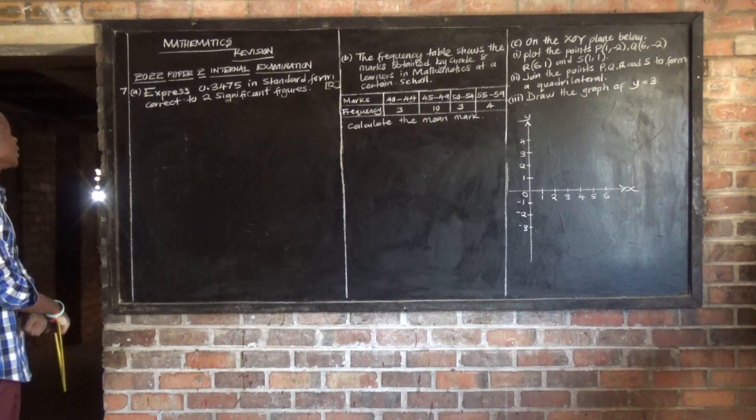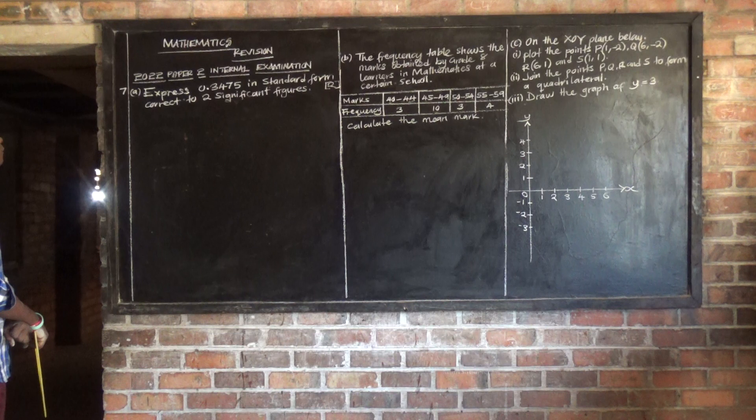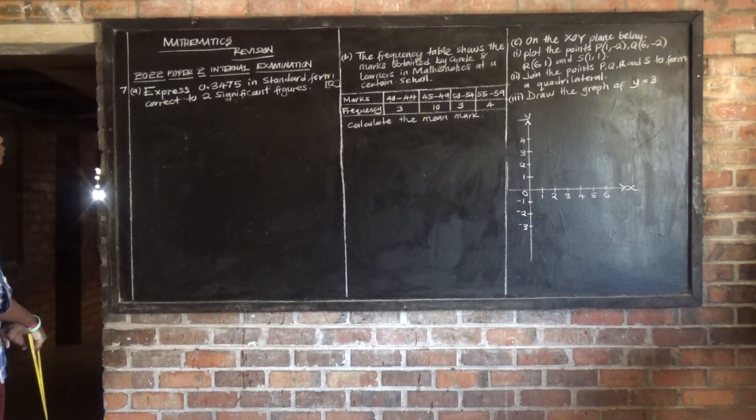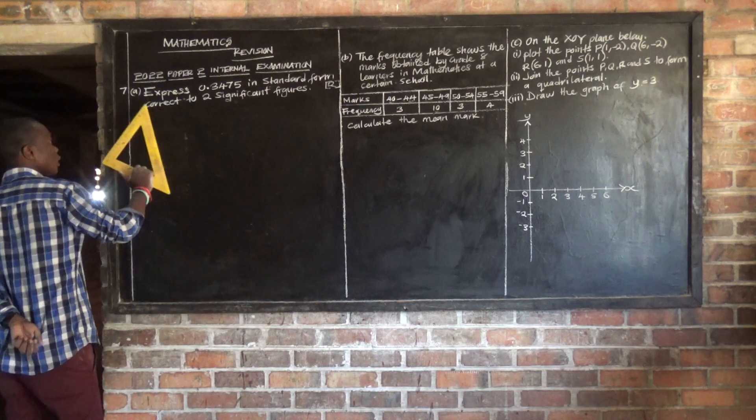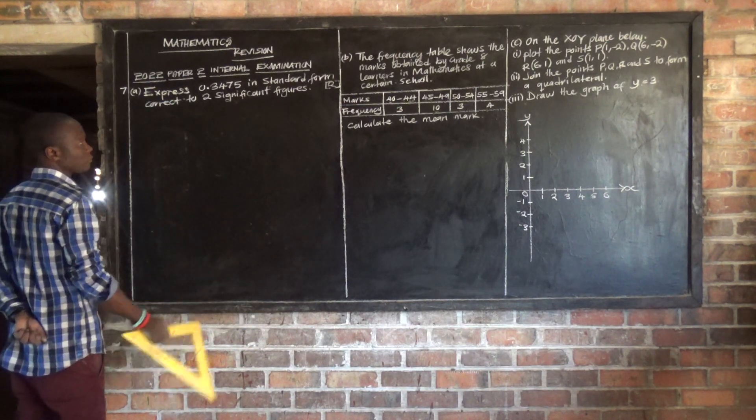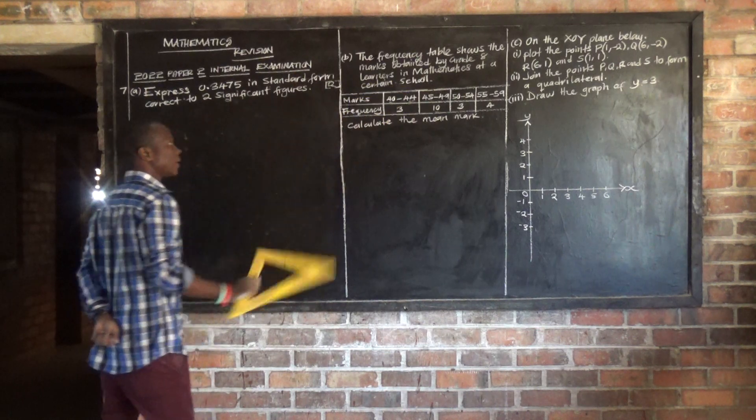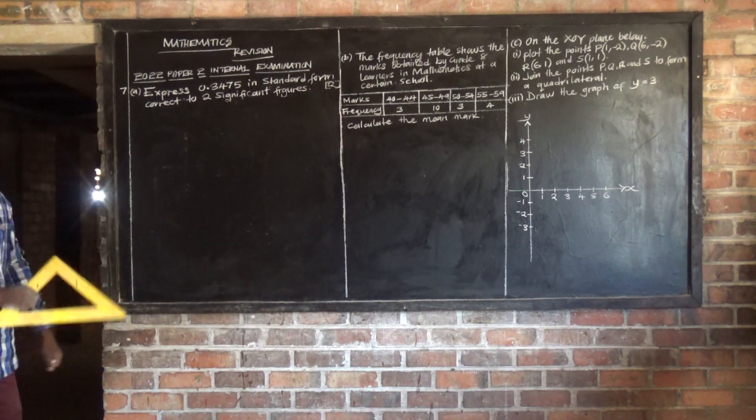So let's look at 2022 paper 2, that is internal examination. Now question number 7. Question 7 has got 3 parts. It has part A, part B and part C. So let's look at part A baseline.